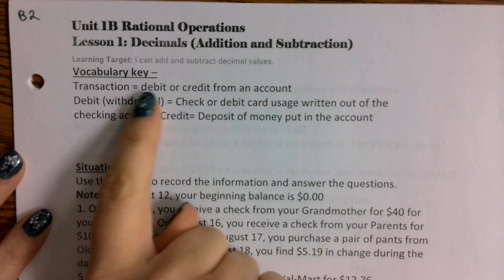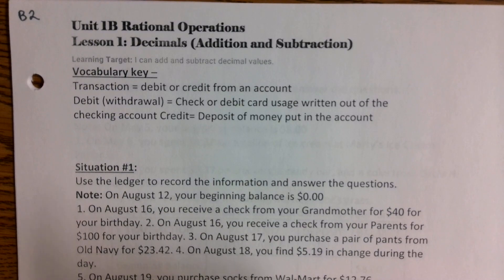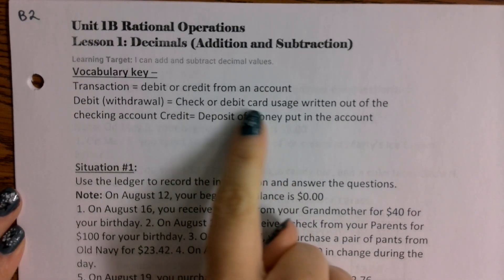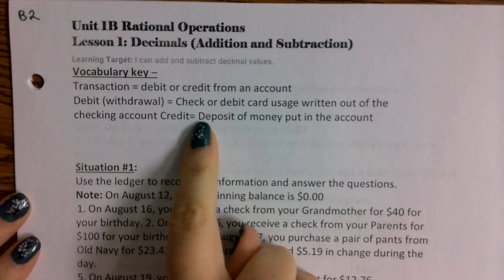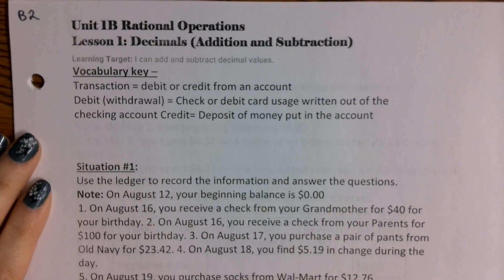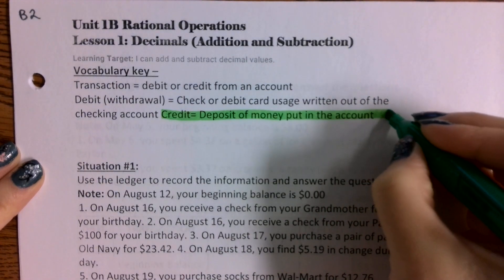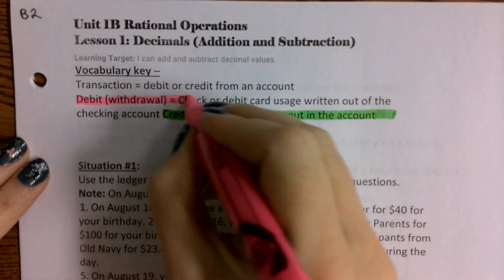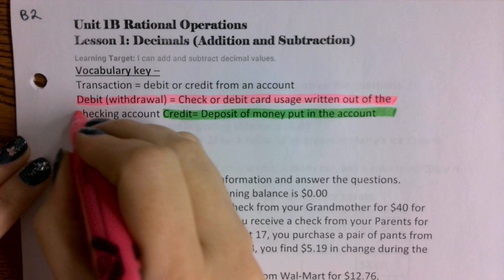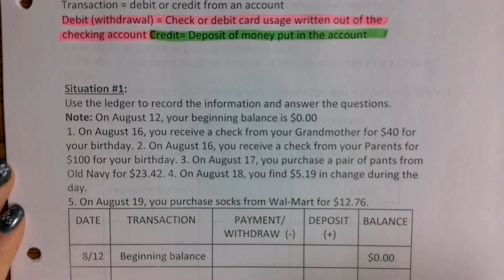Key vocabulary: a transaction is a debit or a credit from an account. A debit means you're withdrawing money — writing a check or using your debit card to pay something. A credit means you are depositing money into the account. Let's highlight this: a credit is when something good happens — you're putting money in. A debit means money is being taken out of your account to pay something.